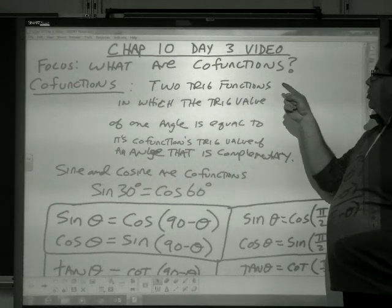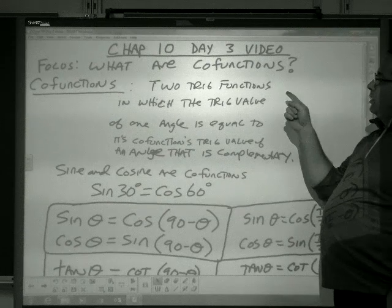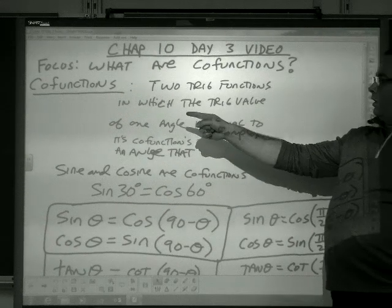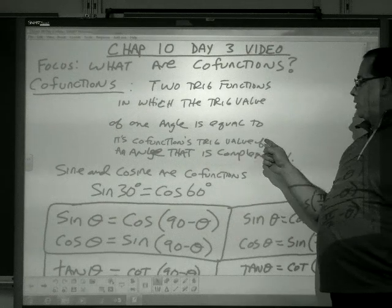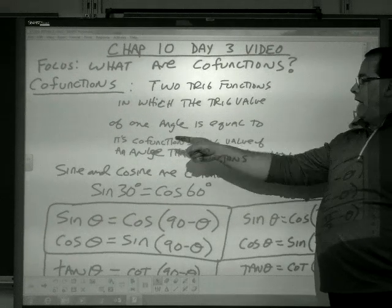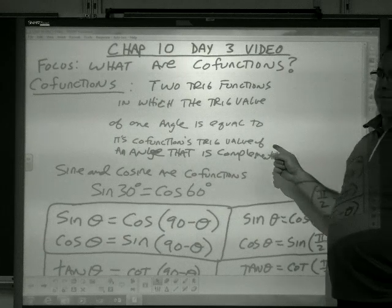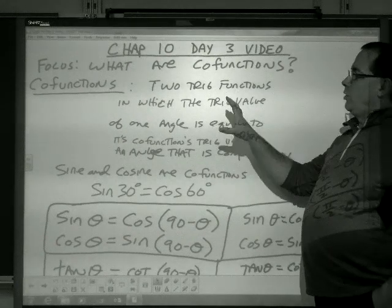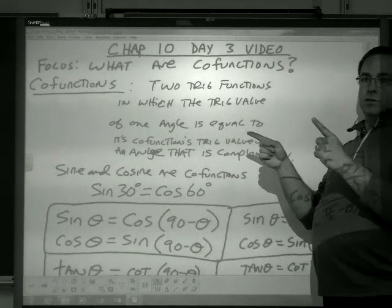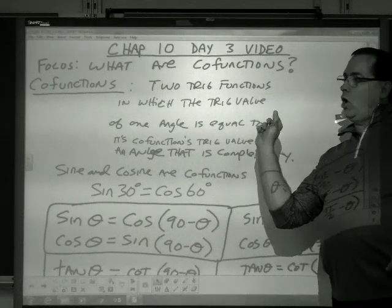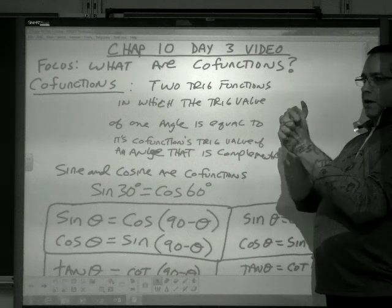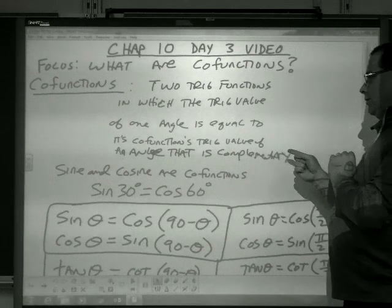Co-functions: two trig functions in which the trig value of one angle is equal to its co-function's trig value of an angle that is complementary. I know that sounds like a lot, but you have two trig functions, and the trig function of one is equal to the trig function of the other, provided that the angle of one is complementary to the angle of the other.